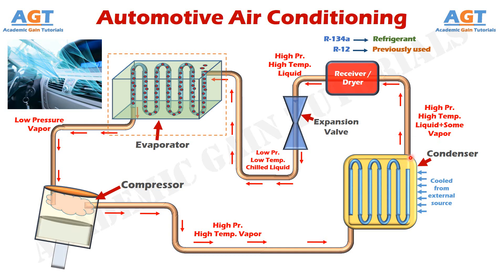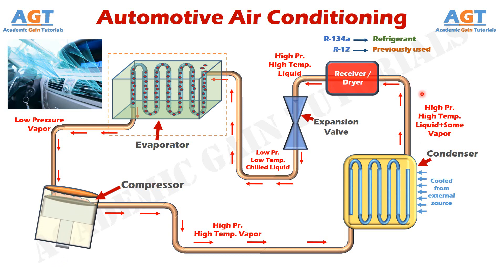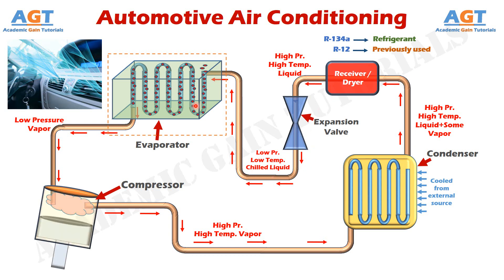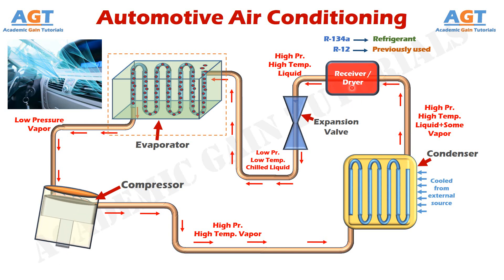Now, this high pressure, high temperature liquid refrigerant will leave the condenser, but there is still some proportion of vapor and liquid mixture present after condensation. So we have to separate the remaining vapor from the condensed liquid refrigerant coming from the condenser; otherwise this remaining vapor will circulate through the rest of the system and form residue inside it that can damage the refrigeration system. So the receiver or dryer filters and separates the remaining moisture or vapor particles from the liquid refrigerant coming from the condenser, and passes only the liquid through to the expansion valve.